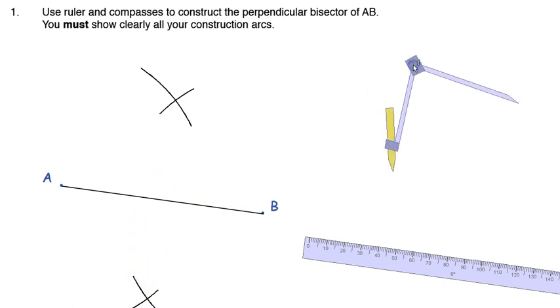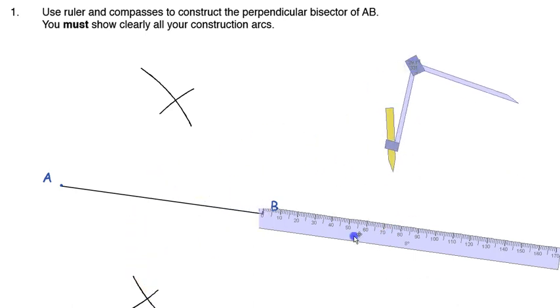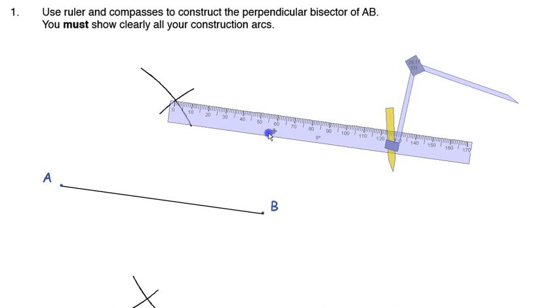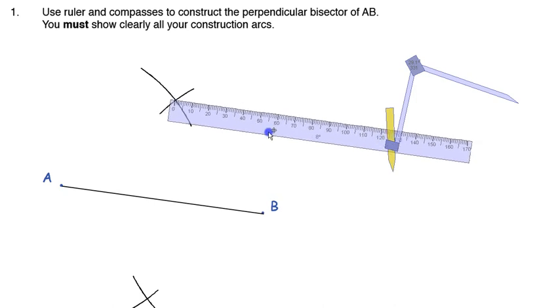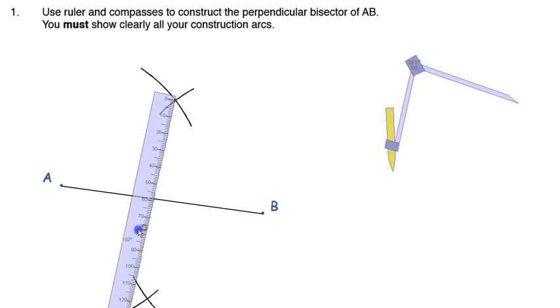Take the compasses out the way. And now last step, nice and easy. Grab my ruler. Work at a crossing point. And then I'm just going to spin it all the way round.